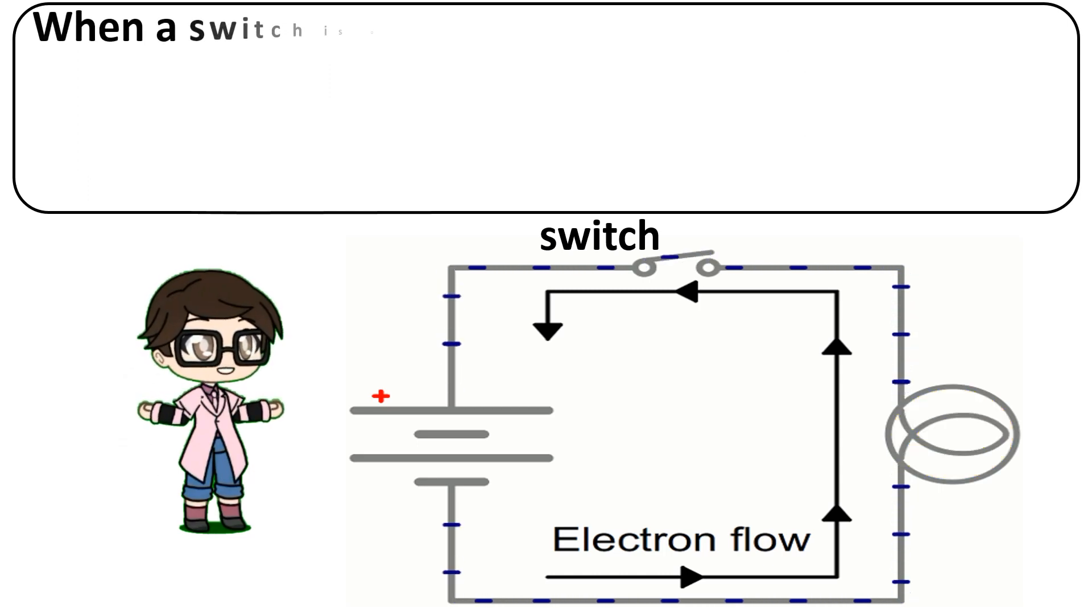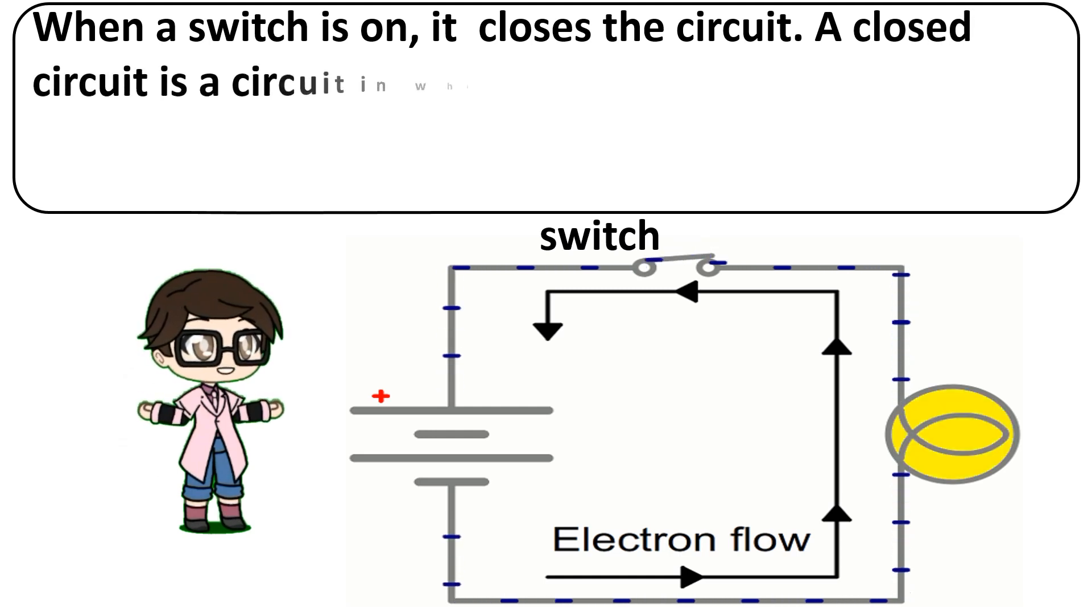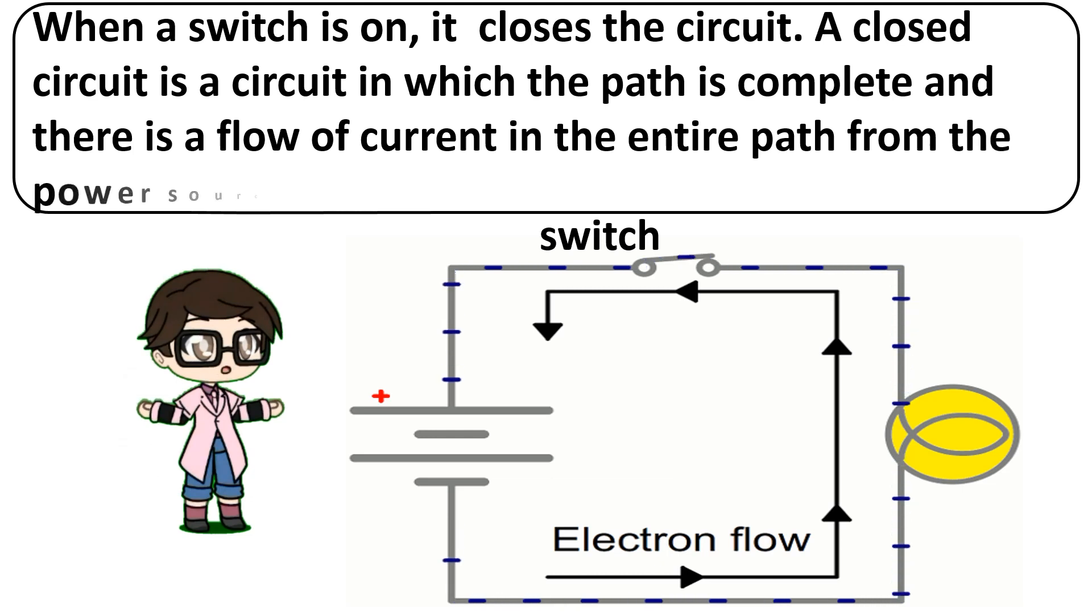When a switch is on, it closes the circuit. A closed circuit is a circuit in which the path is complete and there is a flow of current in the entire path from the power source. In this case, a bulb is lighted.